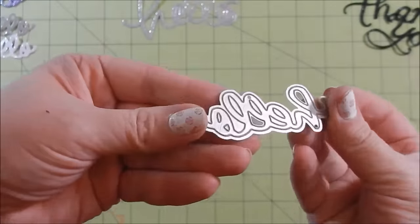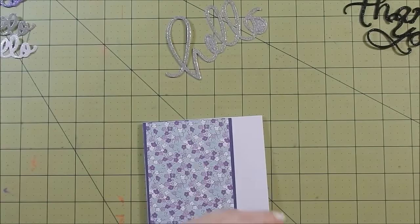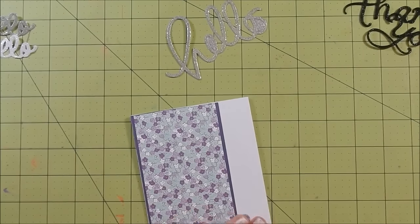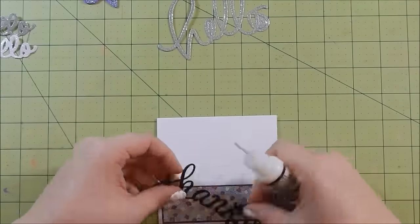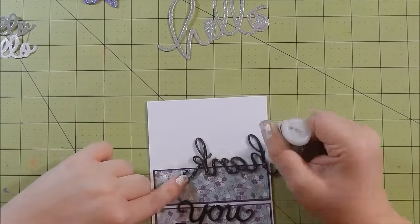So here are the dies I chose - big hello, thanks, thank you, and then hello a smaller one. And what I did was I took fun foam, glitter paper - I just really raided my stash box and cut everything out with the die cuts. And once again I'm off camera, so I apologize for that. I will have still shots at the end of this video.